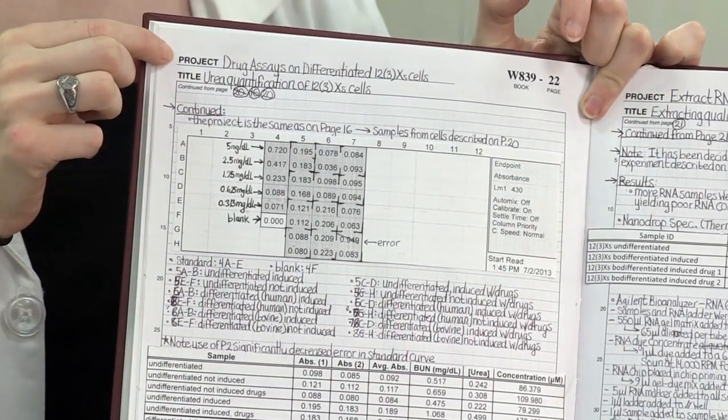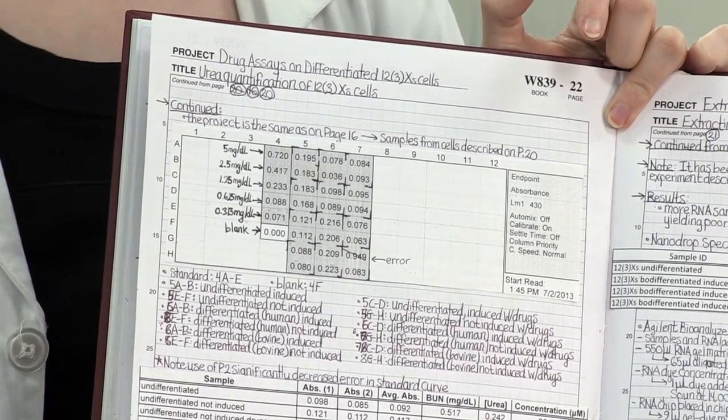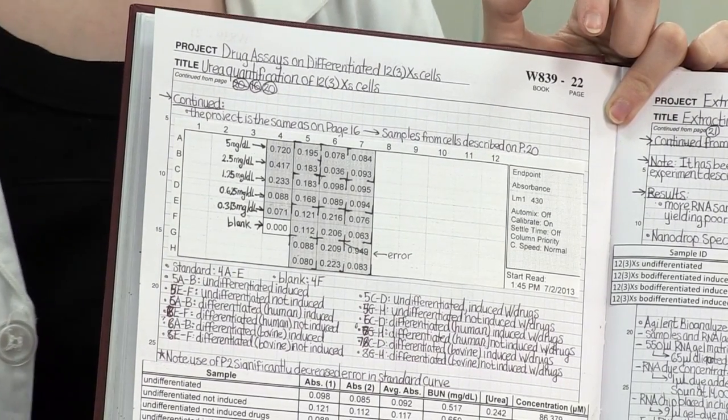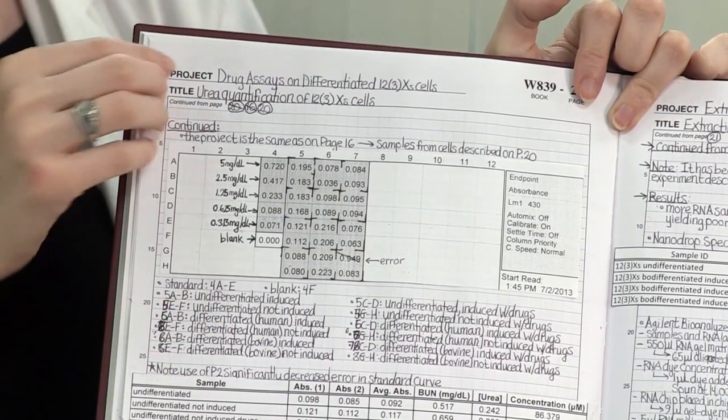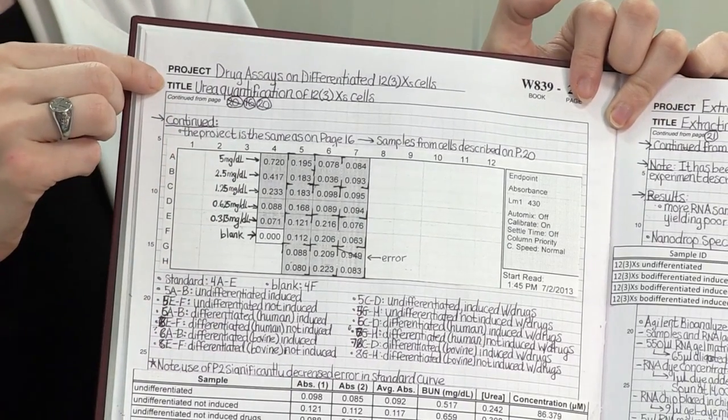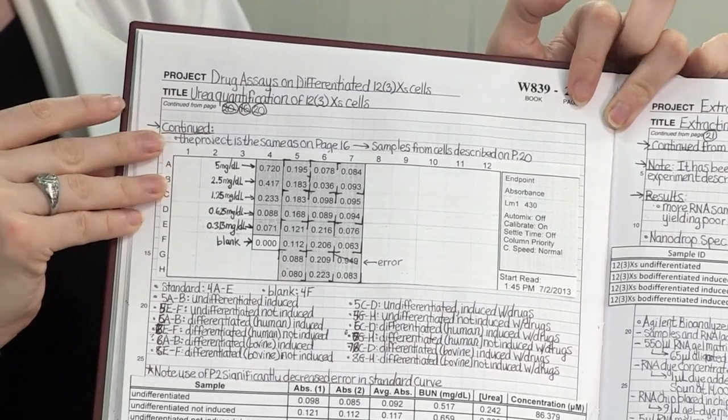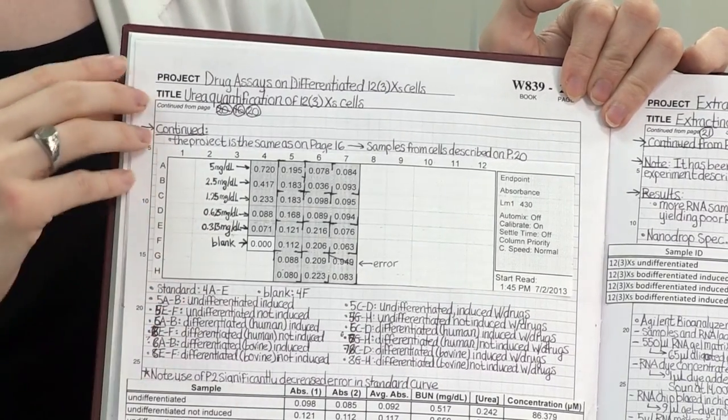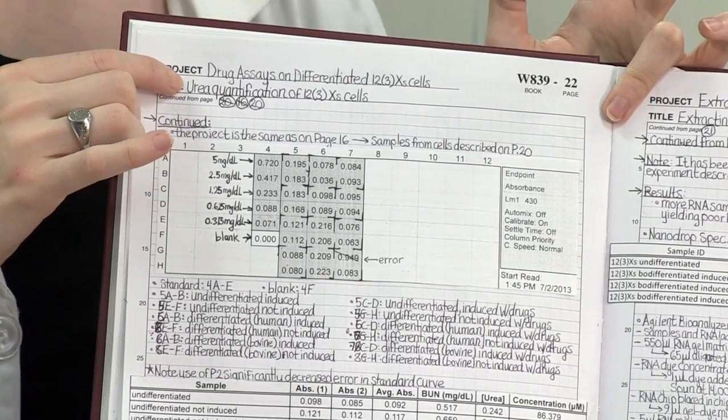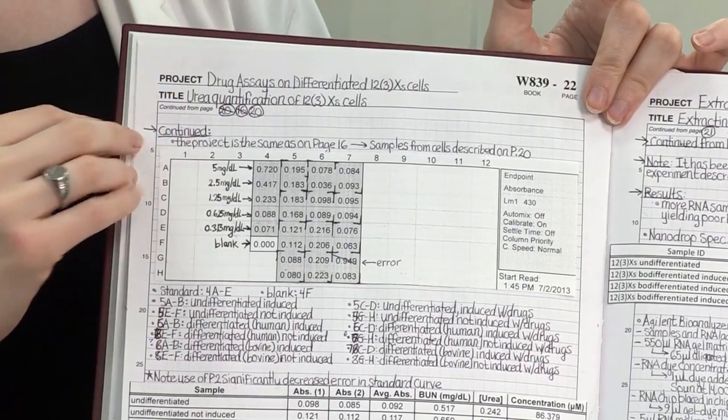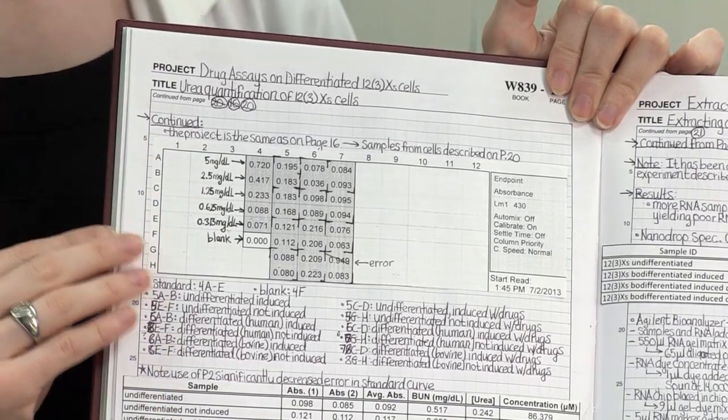So the project is really important because that will allow you to differentiate between different projects that you might be working on. Sometimes you might be using the same assay for a different project and it helps differentiate. It's also really important to have a detailed title that will help you remember what you did at a glance. So I like to talk a little bit about what technique I'm doing in that section as well as what sort of cell type I'm looking at.